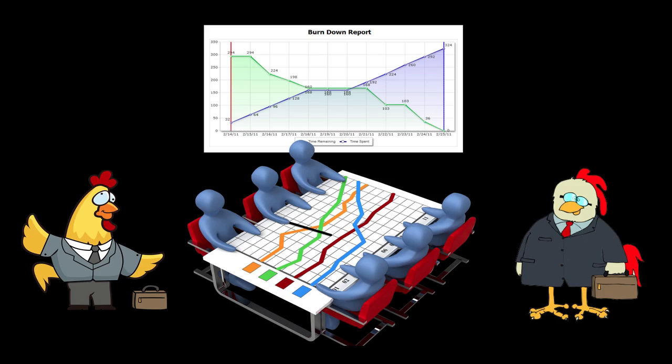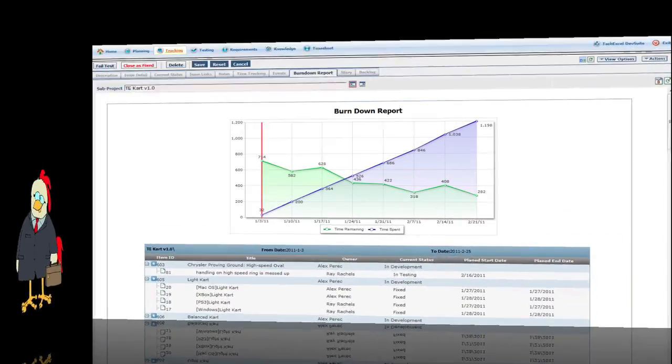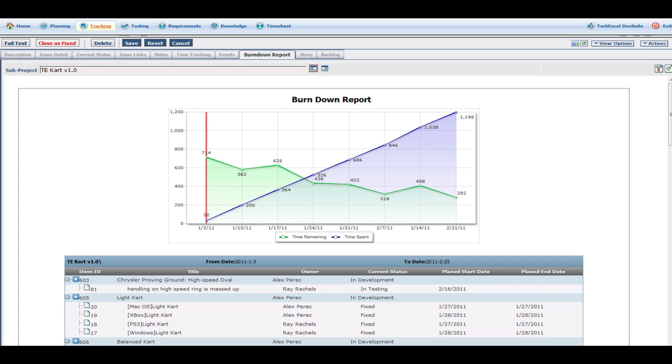A release burndown differs mainly in scope. Since with many products it will take multiple iterations to complete a release, a release burndown tracks overall velocity as progress is made towards a release. With a release burndown, we track story estimates and are more concerned with the average velocity over multiple sprints as opposed to the velocity of individual sprints.